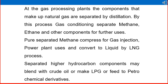At the gas processing plants, the components that make up natural gas are separated by distillation. As explained in the section 2 videos using the process flow diagram, gas conditioning separates methane, ethane, and other components for further uses. Pure separated methane is compressed for gas injection, power plant use, or converted to liquid by the LNG process. Separated higher hydrocarbon components may be blended with crude oil, made into LPG, or fed to petrochemical derivatives.